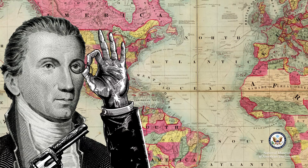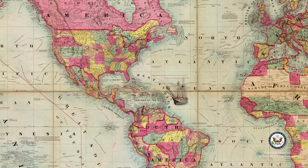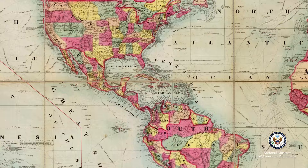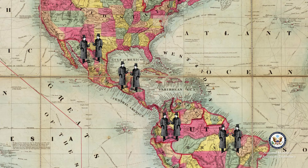But what Monroe did not say in his speech was just as important. He did not lay out a plan of action should the Europeans ignore the warning, because in reality there wouldn't be much the United States could do. However, the presence of American diplomats throughout Latin America did help forge new alliances. Diplomats built relationships with Latin Americans and provided valuable intelligence back to Washington regarding European ambitions in the region.